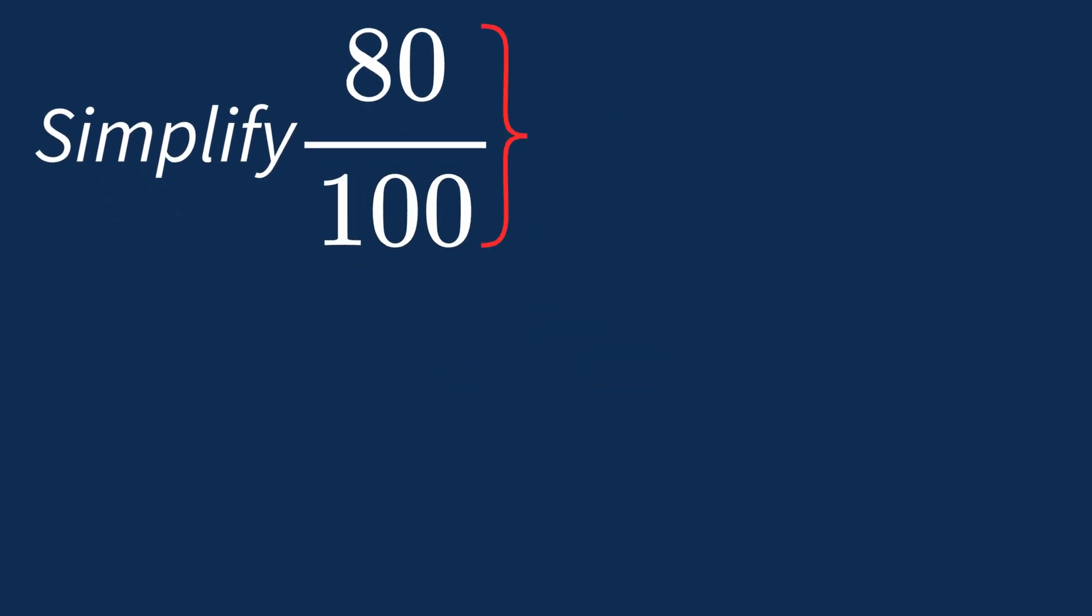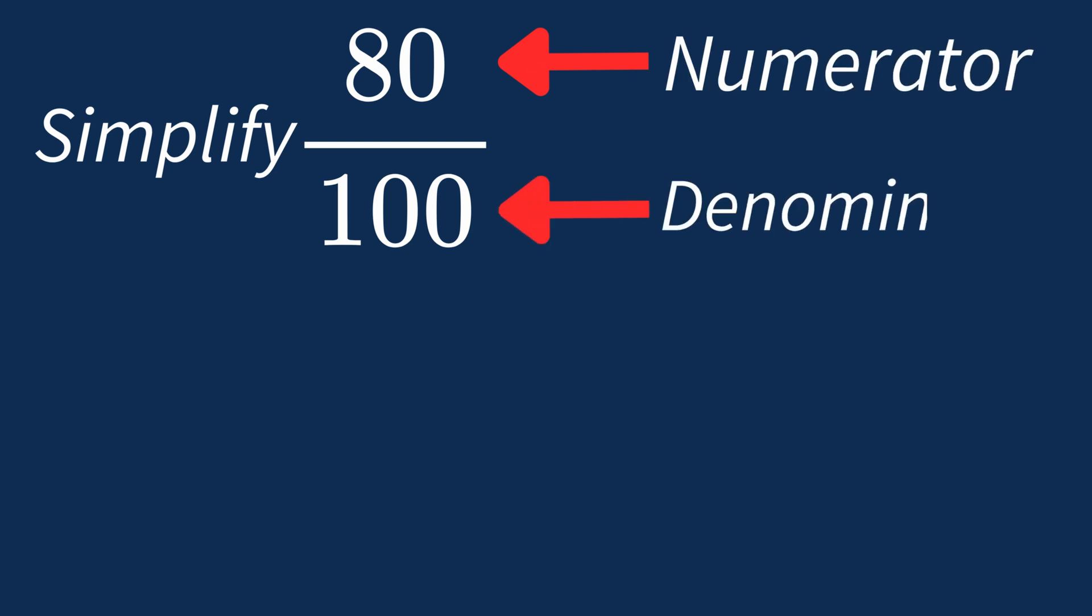To simplify 80 over 100, we need to look for the common factors between the top number, the numerator, and the bottom number, the denominator.